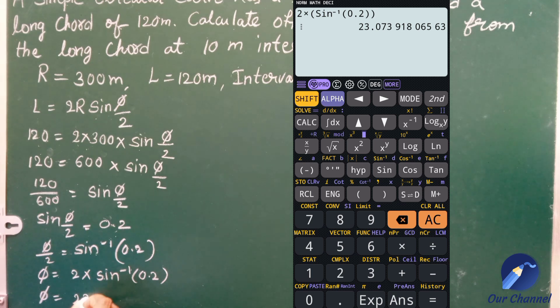On calculating we will get the value of 2 into sin inverse of 0.2 as 23 degrees 4 minutes 26 seconds.